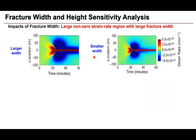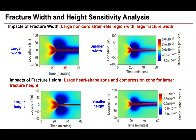Next, we use our forward model to study fracture width and height effects on the strain rate pattern. Larger widths give larger heart-shape size and larger compression zone. Similarly, larger height gives a larger heart-shape size and compression zone. For different heights, the strain rate pattern is also slightly different. From this analysis, we can see it is possible to use the strain rate data to calculate fracture width and height, since these two parameters have large impact on the strain rate data.